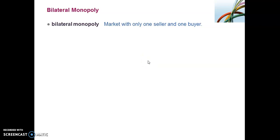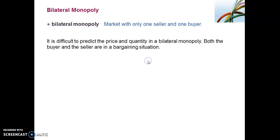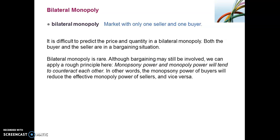Lastly, we'll look at bilateral monopoly. A bilateral monopoly is a market with only one seller and one buyer. In such a situation, it is difficult to predict what the outcome on price and quantity is going to be, because both the buyer and the seller — both the monopsonist and the monopolist — have bargaining power. A bilateral monopoly is a situation that is quite rare, and although bargaining may still be involved, there is a rough principle here.